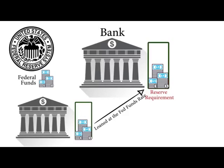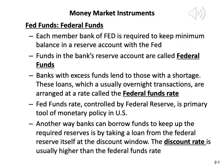The Fed Funds Rate is important because it sets the tone for many other interest rates in the economy. Another way a bank can borrow funds to maintain required reserves is by taking a loan directly from the Federal Reserve at the discount window. The discount rate is the interest rate the borrowing bank pays the Fed. The discount rate is normally higher than the Federal Funds Rate, because the Fed encourages banks to borrow among themselves. The Fed uses the discount rate as a last-resort mechanism, keeping it slightly higher than the Federal Funds Rate as an incentive.